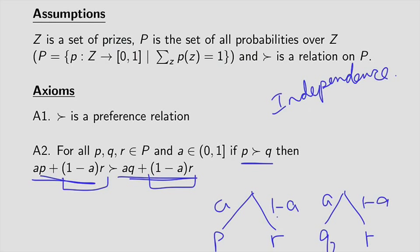So this is why this is sometimes called independence. Your choice has to be independent of R as this irrelevant outcome. Because in each of these compound lotteries, you'll do the same thing if the event doesn't actually happen. So this is the independence assumption. If the agent strictly prefers P over Q, then the agent must strictly prefer this lottery over this other compound lottery. So that's axiom A2.